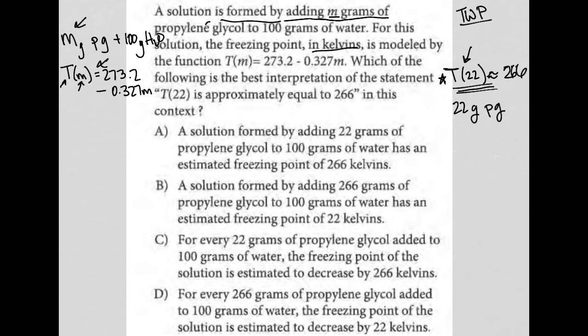So hopefully that makes sense. If I add 22 grams of propylene glycol, I should get a freezing point temperature approximately equal to 266 degrees Kelvin.